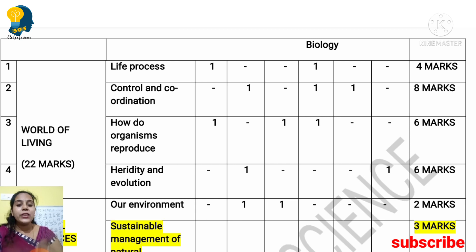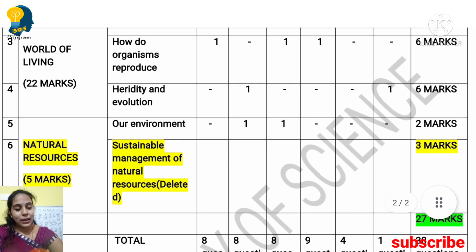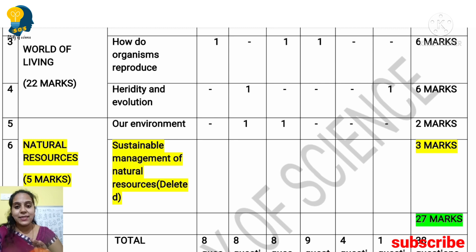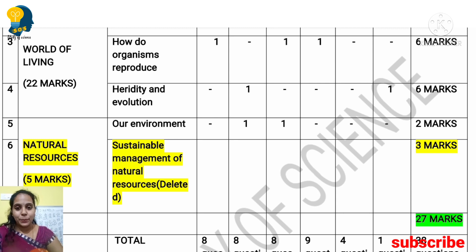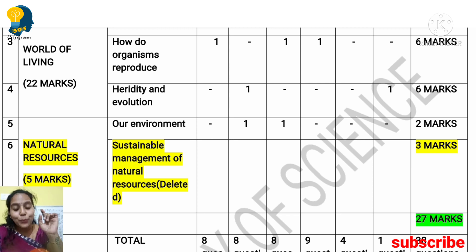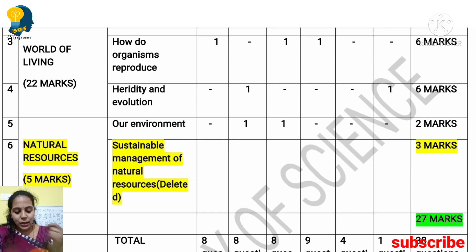Our Environment lesson carries 2 marks. In this way, the total marks for the World of Living theme is 27 marks — so from biology you can easily score 27 marks. So this is how the marks are divided: Physics gets 28 marks, Chemistry gets 25 marks, and Biology gets 27 marks.